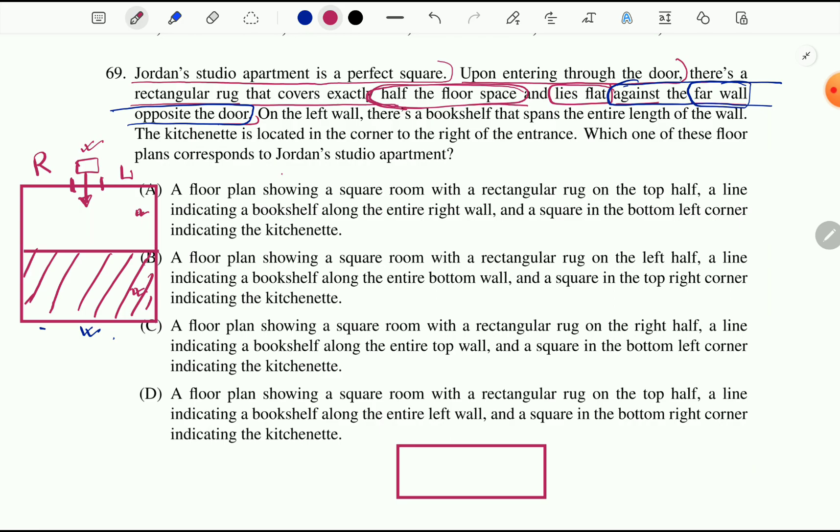So let's study next sentence. On the left wall there's a bookshelf that expands. So expands means spread out the entire length, entire length of the wall. So we locate left side here. Now let's say this whole area represents a bookshelf.